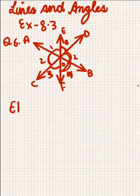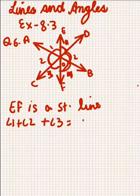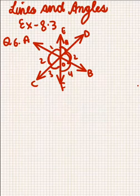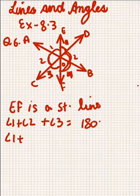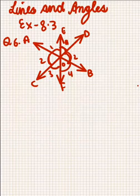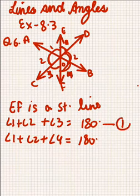We know that EF is a straight line, so angle 1 plus angle 2 plus angle 3 will be equal to 180 degrees, because angles on a straight line sum to 180 degrees. Similarly, angle 1 plus angle 2 plus angle 4 on the opposite side will also equal 180 degrees, for the same reason. This gives us equation 1 and equation 2.